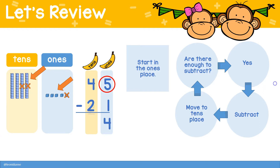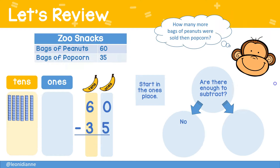Four tens minus two tens is two tens. Sometimes, however, we do not have enough in the ones place. Here we're showing 60 and we need to subtract five ones. In this case, we'll need to regroup.